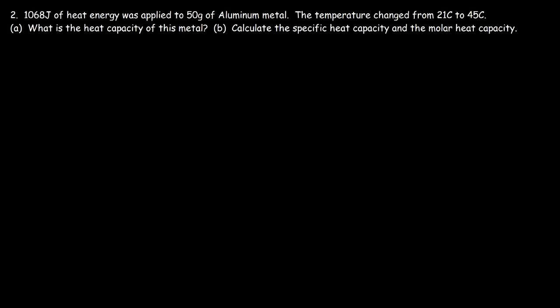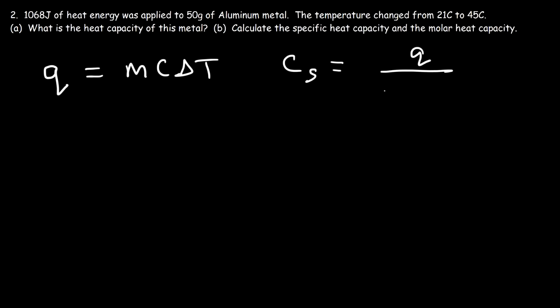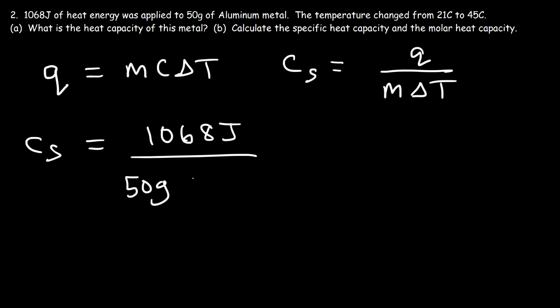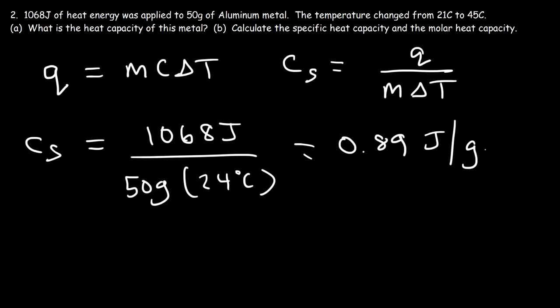Now let's calculate the specific heat capacity of this metal. Using q = mcΔT, rearranged to c = q / (mΔT): the heat energy is 1068 joules, the mass is 50 grams, and the temperature change is 45 − 21 = 24°C. So 1068 divided by 24 is 44.5, then divided by 50, giving a specific heat capacity of 0.89 joules per gram per Celsius.